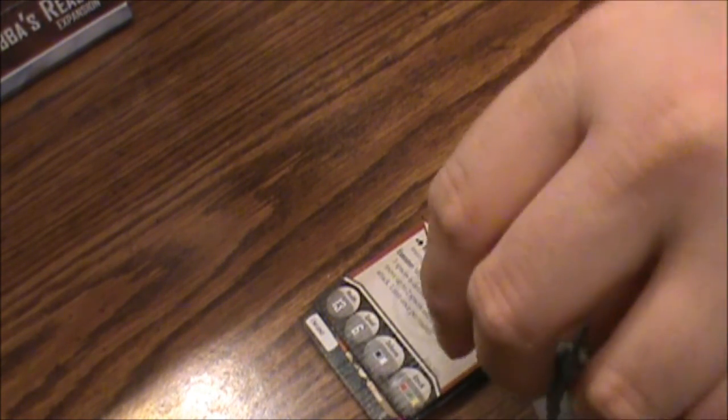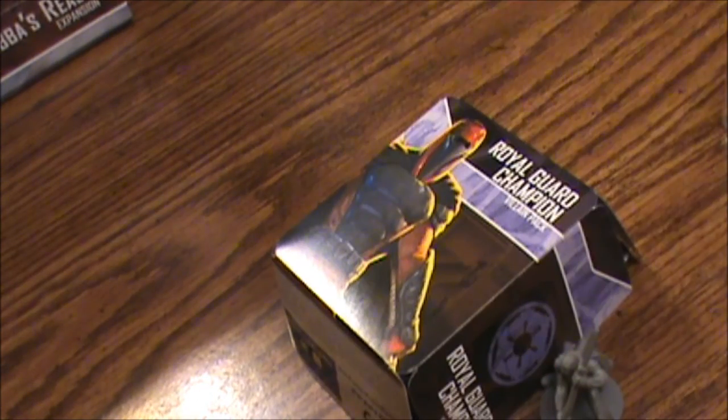But that is going to do it for this episode. Thanks again to Wyatt for letting me go through all his cool toys. This is the Royal Guard Champion villain pack for Star Wars Imperial Assault. You, of course, need the core game to play. But that'll do it for this episode. As always, thank you for watching. And we hope to see you next time on What's Inside.